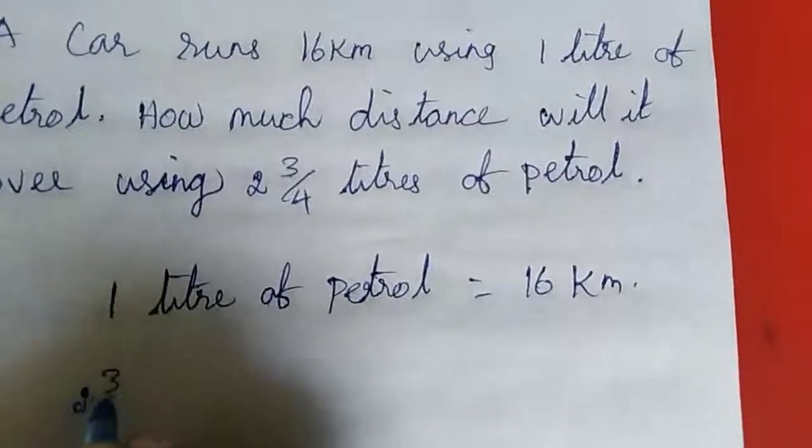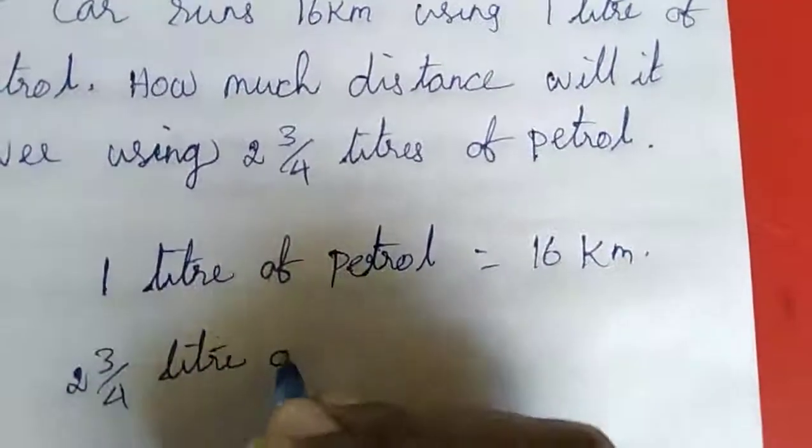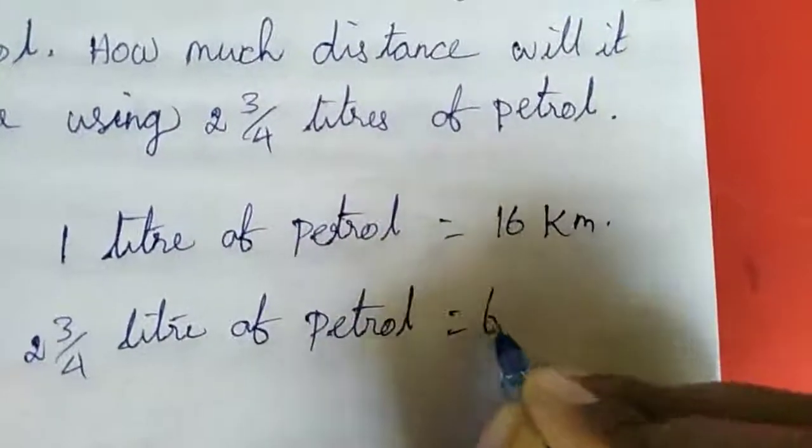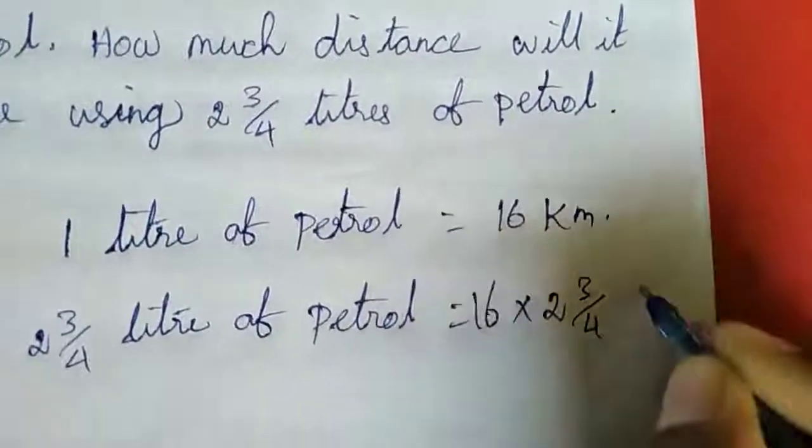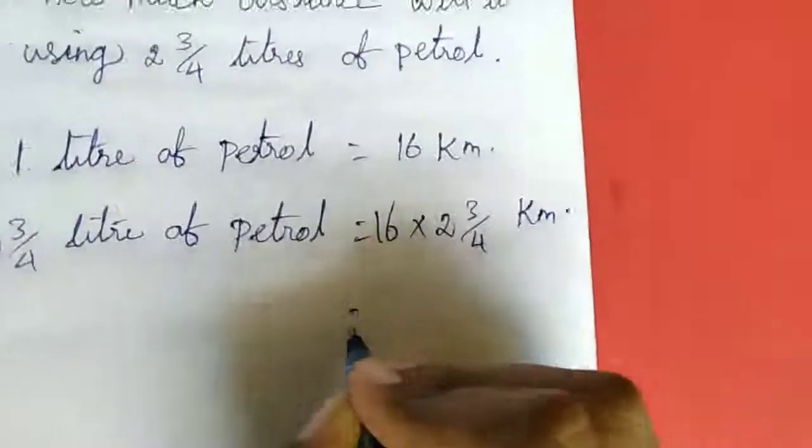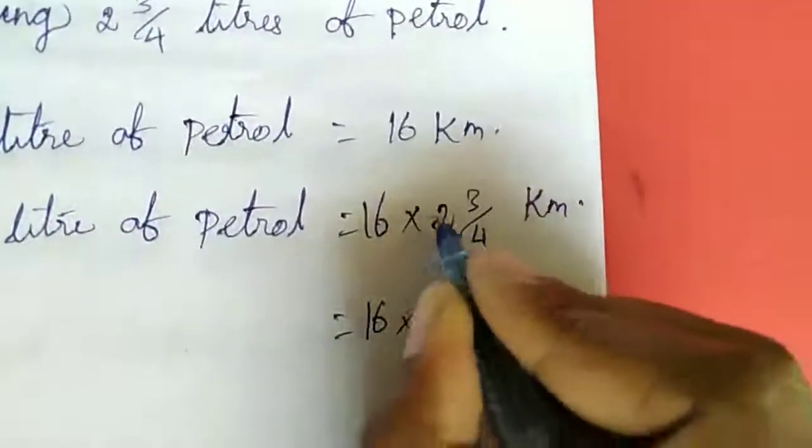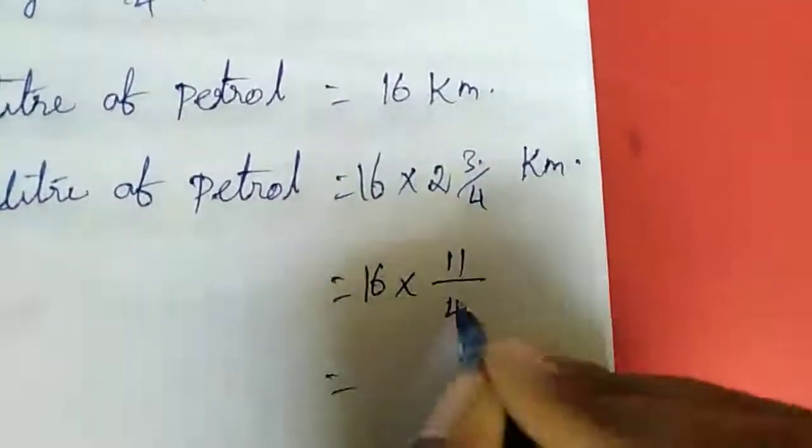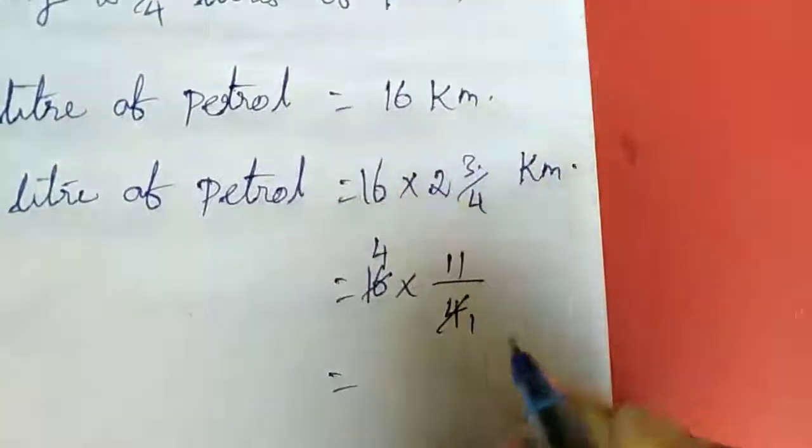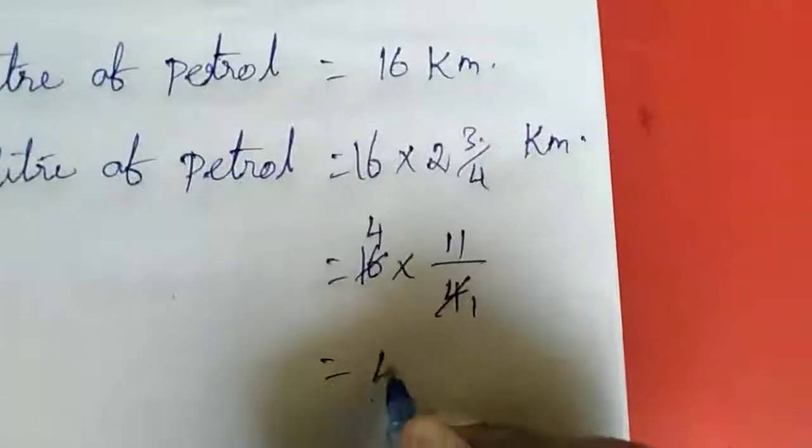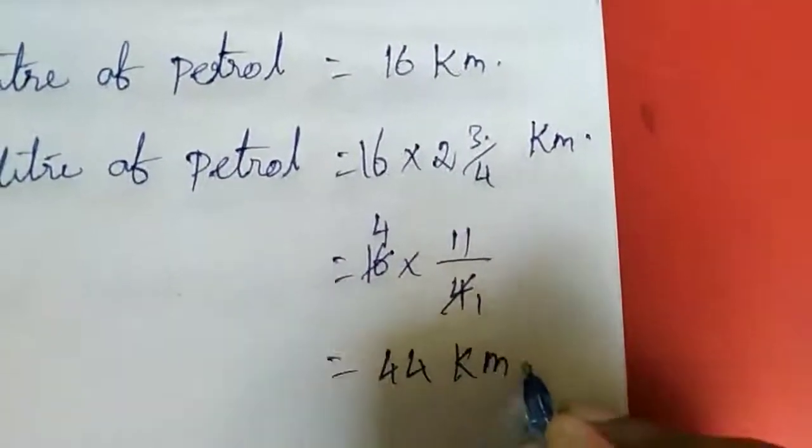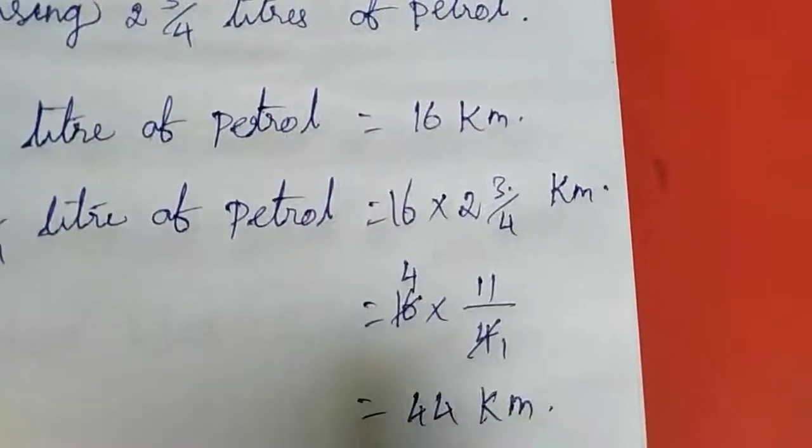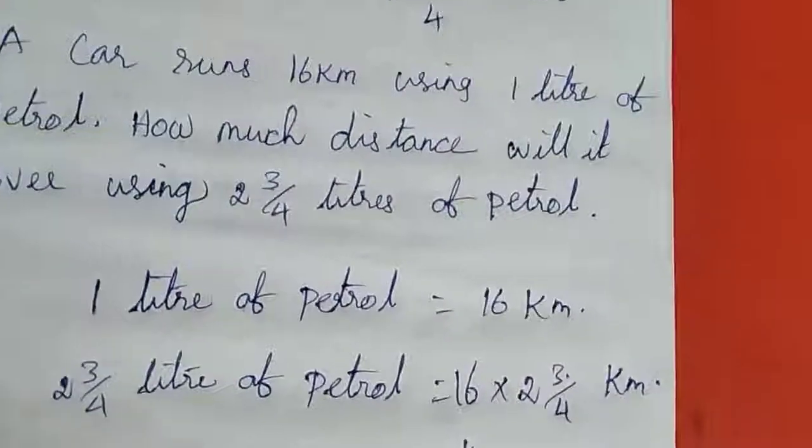Therefore 2 and 3 by 4 liter of petrol equal to 16 into 2 and 3 by 4 kilometer. 16 into 4 is 8, 8 plus 3 is 11 by 4. This one we can cancel. 4 times 4 is 16. If you multiply 4 and 11 you get 44 kilometer. So with 2 and 3 by 4 liter of petrol, we can travel 44 kilometer.